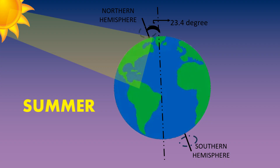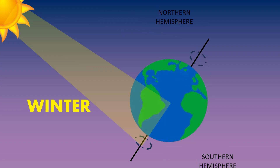So, what happens is when the North Pole is facing the sun, it means the northern hemisphere is in summer, while the southern hemisphere is in winter. Similarly, if the southern hemisphere is facing the sun, that means it is in summer, whereas the northern hemisphere is having a winter season.